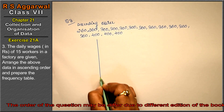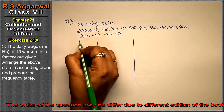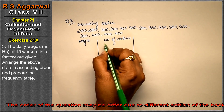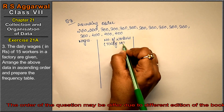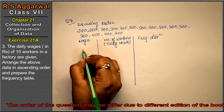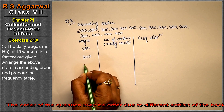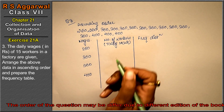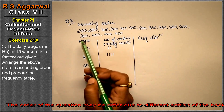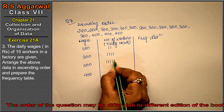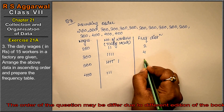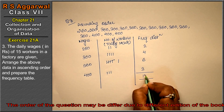Now we prepare the frequency distribution table. The columns are: wages, number of workers, and tally marks. Wages are 260, 300, 360, and 400. For 260, 2 tally marks. For 300, 4 tally marks. For 360, 6 tally marks. For 400, 3 tally marks. Total: 2 + 4 + 6 + 3 = 15. This is the answer.